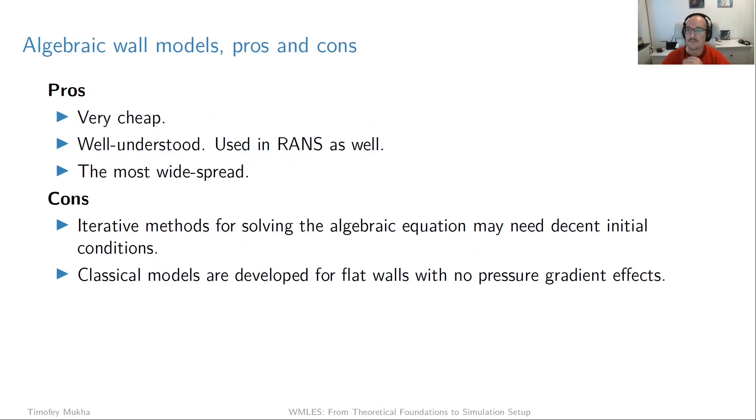So let's sum up pros and cons, just like we did for the other types. So one big pro is that it's extremely cheap. Algebraic models do not take up a significant amount of time as compared to the solution to the LES equations. Usually, this numerical procedure to solve for tau wall, it converges after a few iterations. It's very nice. If you use an explicit model, then of course, the cost is pretty much zero. You just evaluate an expression and you're done.